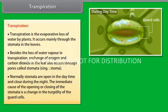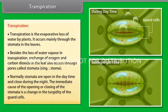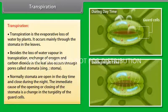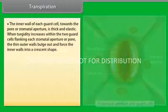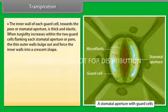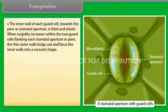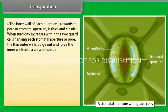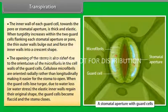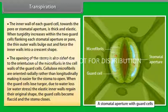Normally, stomata open in the daytime and close during the night. The immediate cause of the opening or closing of the stomata is a change in the turgidity of the guard cells. The inner wall of each guard cell towards the pore or stomatal aperture is thick and elastic. When turgidity increases within the two guard cells flanking each stomatal aperture or pore, the thin outer walls bulge out and force the inner walls into a crescent shape. The opening of the stomata is also aided due to the orientation of the microfibrils in the cell walls of the guard cells. Cellulose microfibrils are oriented radially rather than longitudinally, making it easier for the stoma to open.